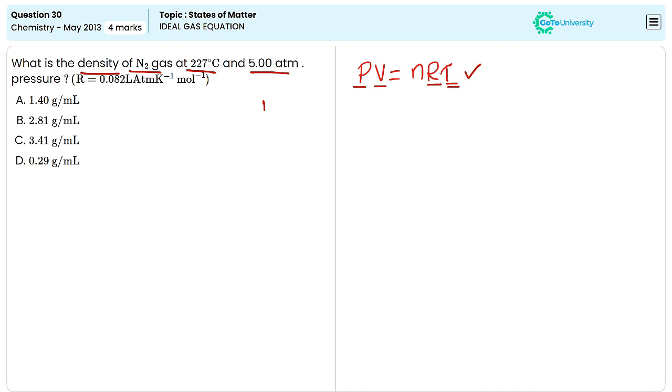Now, in order to find out the number of moles, we have the equation: mass divided by molar mass, W divided by M. We can substitute the value of n in this equation, so we can write PV is equal to W by M into RT.